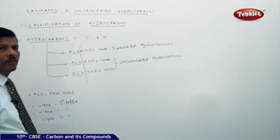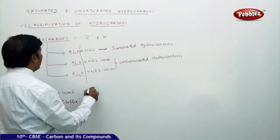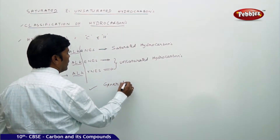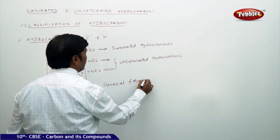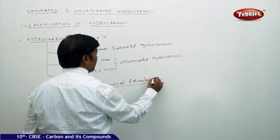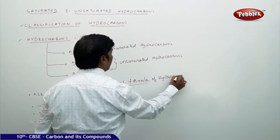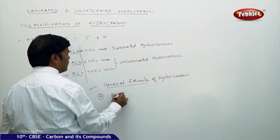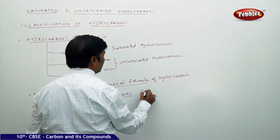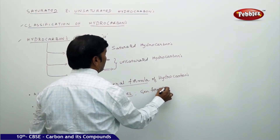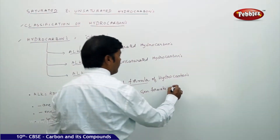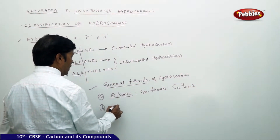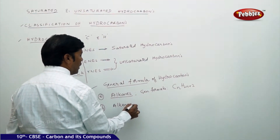Now let us look at the general formulas for saturated and unsaturated hydrocarbons. For alkanes, the general formula is CₙH₂ₙ₊₂.